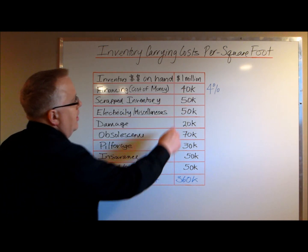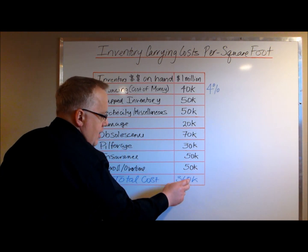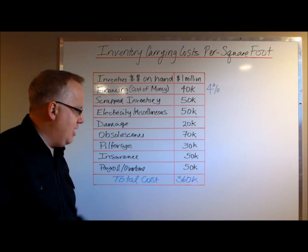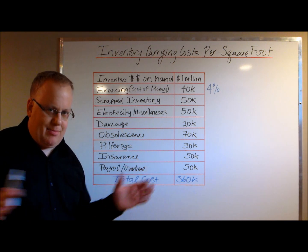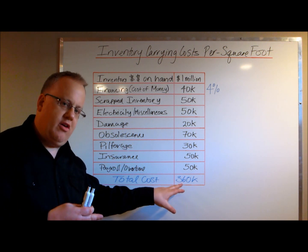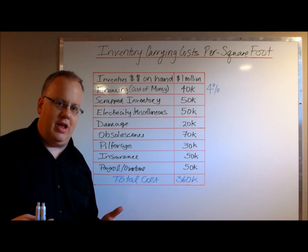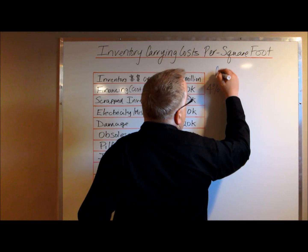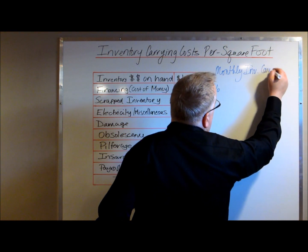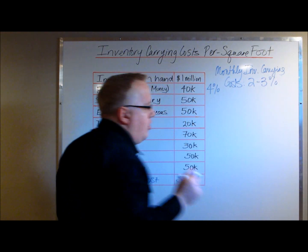This Excel spreadsheet allows you to input your specific inventory cost drivers. In this example, the various costs total three hundred and sixty thousand dollars per year, based on a monthly inventory value of one million dollars. Most companies are flabbergasted when they see this. This amount divided by 12 months gives the standard applied to inventory value on hand on a monthly basis — and monthly inventory carrying costs are on average two to three percent of the inventory value on hand.